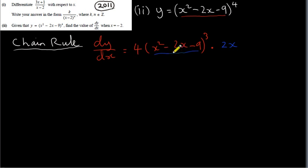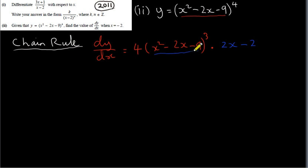When we differentiate minus 2x, we get the coefficient minus 2. More fully, it's minus 2x to the power of 0 — the power was 1, and taking 1 from 1 gives 0, and x to the power of 0 is 1. So for a linear term we just write down the coefficient of x. Minus 9 is a constant, so its derivative is 0. We therefore multiply everything by 2x minus 2.